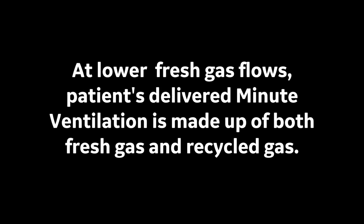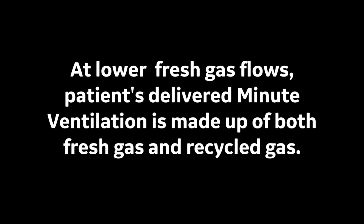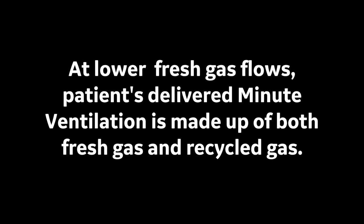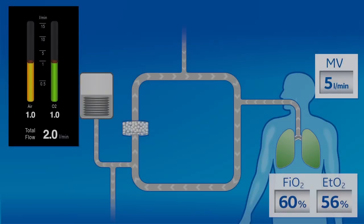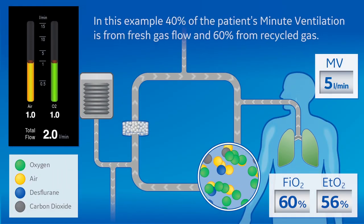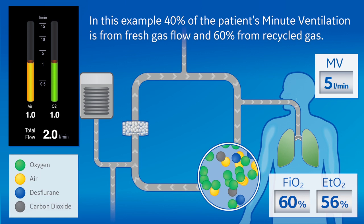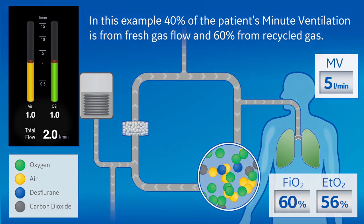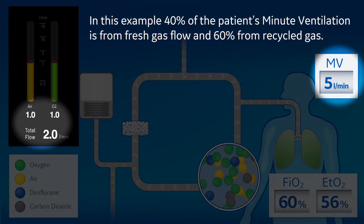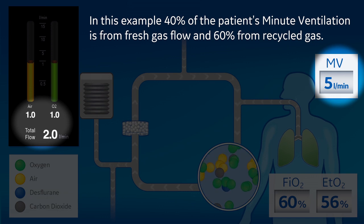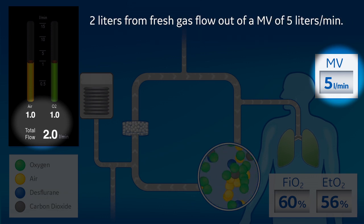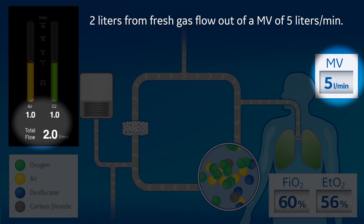At lower fresh gas flows, the patient's delivered minute ventilation is made up of both fresh gas and recycled gas. In this example, 40% of the patient's minute ventilation is from fresh gas flow and 60% from recycled gas — 2 liters from fresh gas flow out of a minute ventilation of 5 liters per minute.